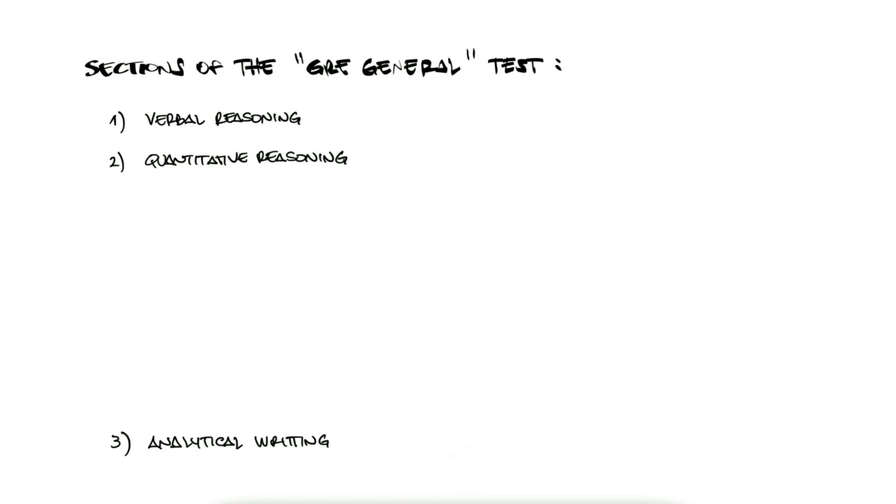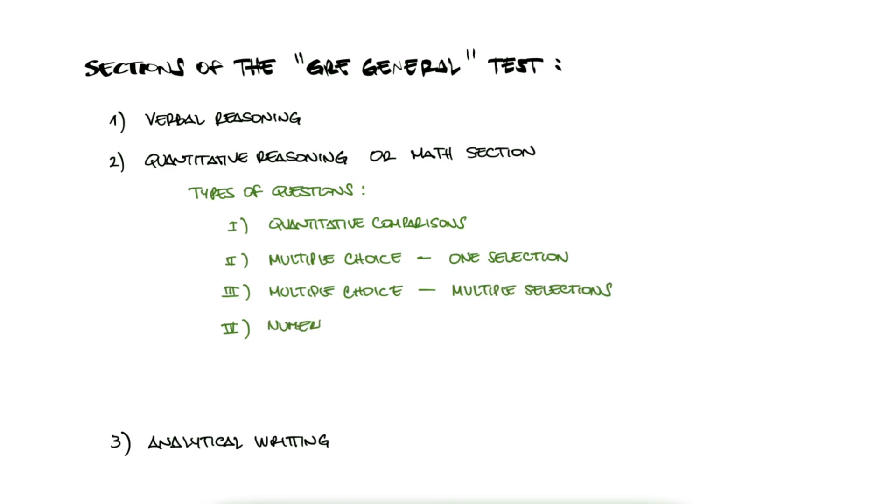The Quantitative Reasoning section itself, commonly referred to as the Math section, contains four types of questions: quantitative comparisons, multiple choice questions with one or more correct answers, and numeric entry questions.